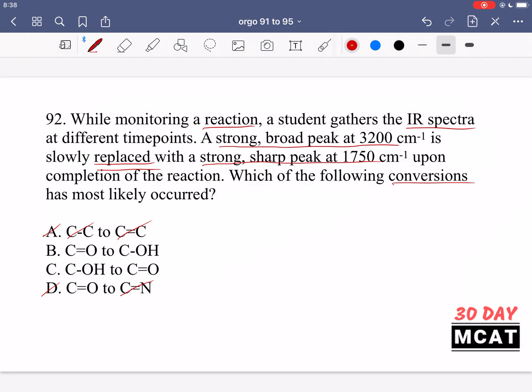When you see a strong broad peak, the broadness often comes from hydrogen bonding. The OH group shows a strong broad peak at 3200. A strong sharp peak at 1750 is our carbonyl peak - a double bonded oxygen. We're seeing disappearance of 3200 and appearance of 1750. C is our correct answer. B is incorrect because it's going the other way.